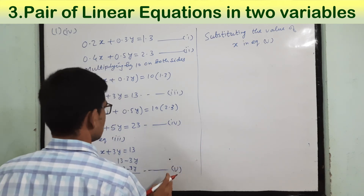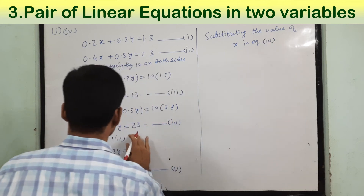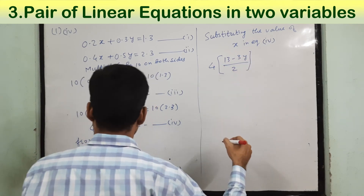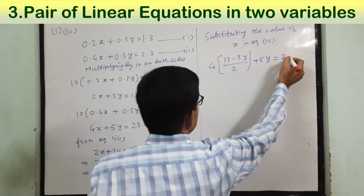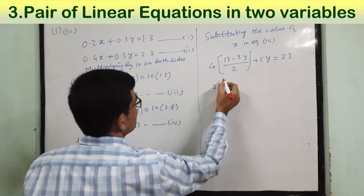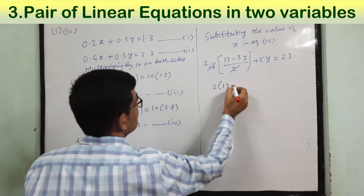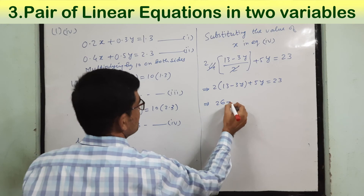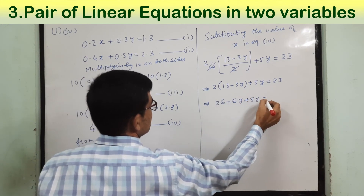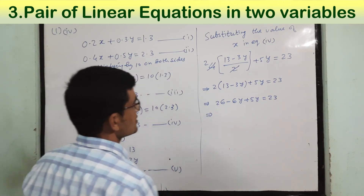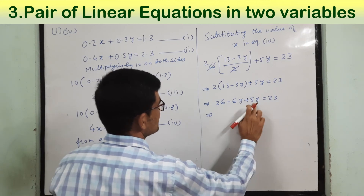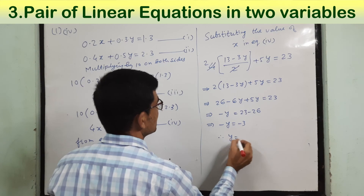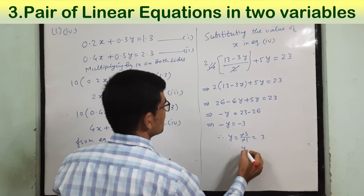Substituting into equation 4: 4 times (13 minus 3y) divided by 2, plus 5 times y equals 23. We can simplify: 2 times (13 minus 3y) plus 5y equals 23. Opening the bracket: 26 minus 6y plus 5y equals 23. So minus 6y plus 5y equals 23 minus 26, giving minus y equals minus 3. Cancelling the minus signs, y equals 3.